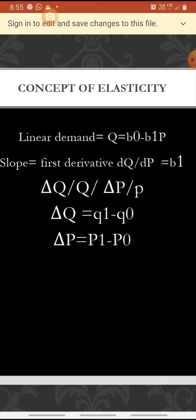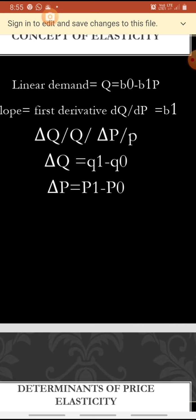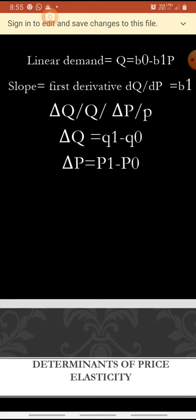Considering a linear demand function — a straight line equation — Q equals B0 minus B1P. The slope or first derivative dQ by dP: in the equation, the coefficient of P is B1, so dQ by dP equals B1. The equation may also be written as delta Q by Q divided by delta P by P, where delta denotes the change. Delta Q equals Q1 minus Q0, the earlier value minus the present value.